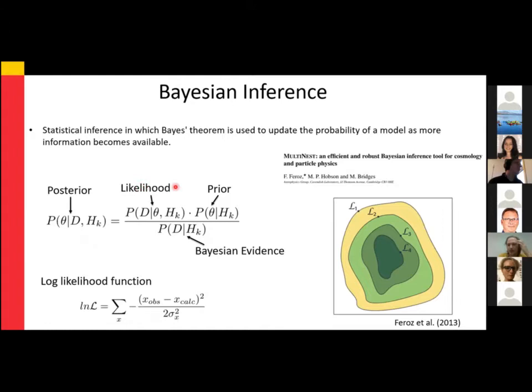To find the maximum likelihood, we use a Monte Carlo approach with an algorithm called MultiNest, originally developed for cosmology and particle physics, which is now starting to have more geological applications. This is a type of Bayesian package called nested sampling.